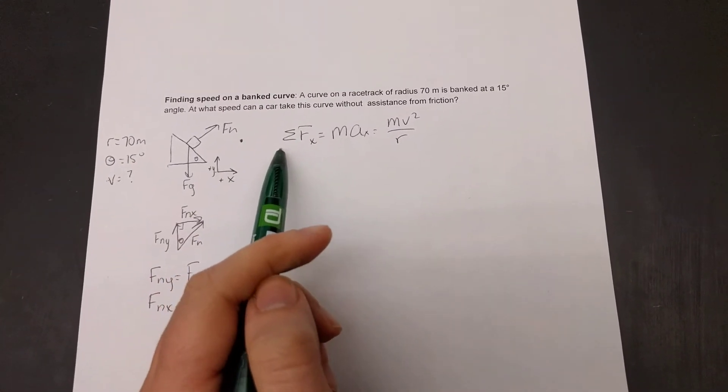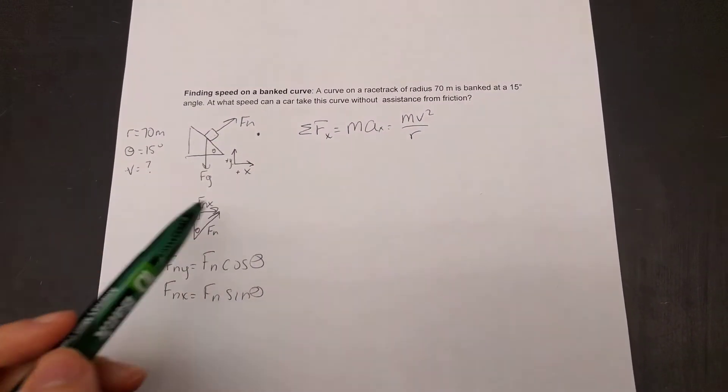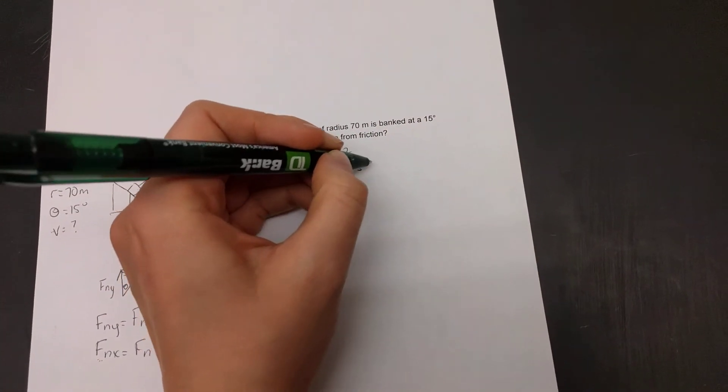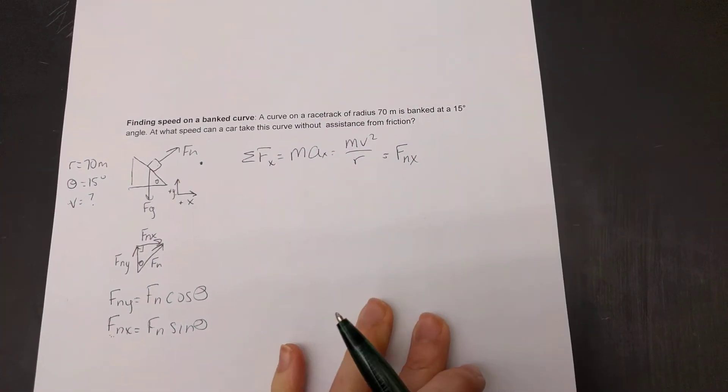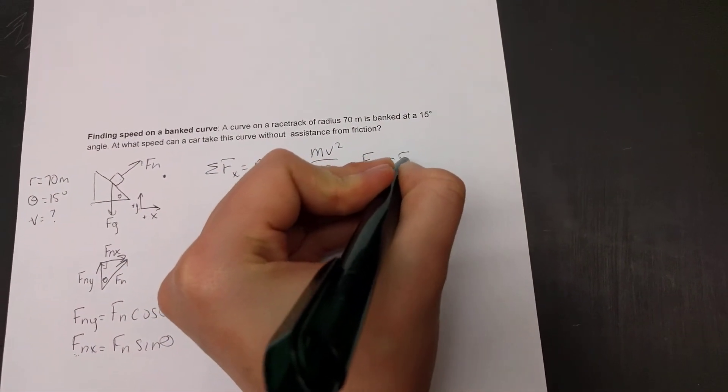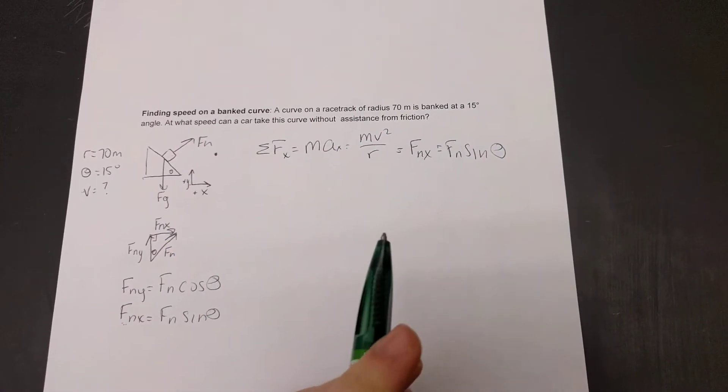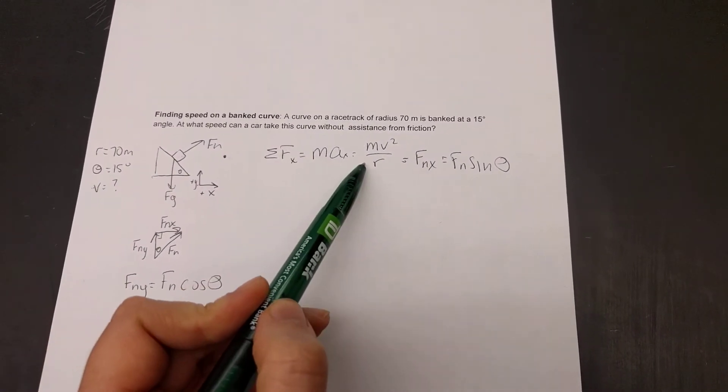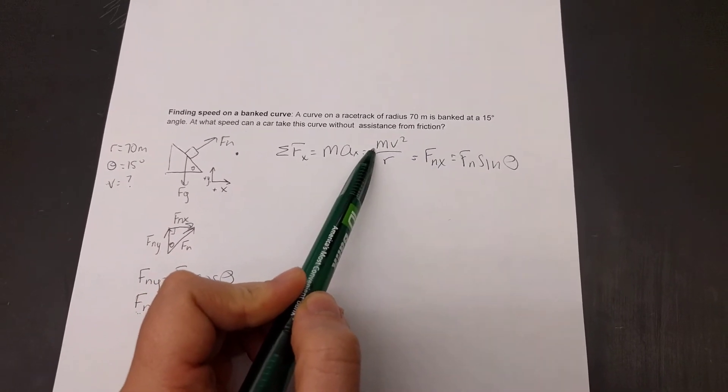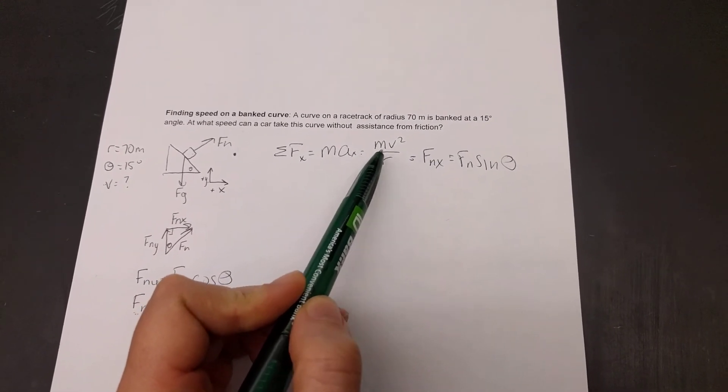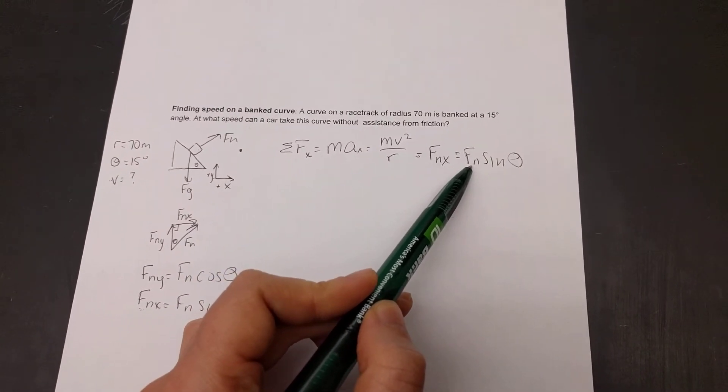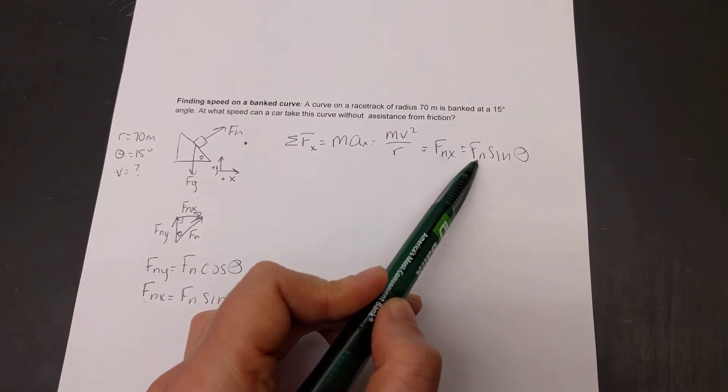Alright. So, going back here, our sum of forces in the x, the only x direction vector we have is the x component of our normal force. So, this is going to be our normal force in the x, which we said is going to be our normal force times sine of theta. So, mv squared over r is equal to normal force times sine of theta. We know our angle, we're hoping mass is going to cancel out, radius we have, velocity is what we're solving for, so the only other thing is normal force here, and we're going to have to solve for normal force some other way.